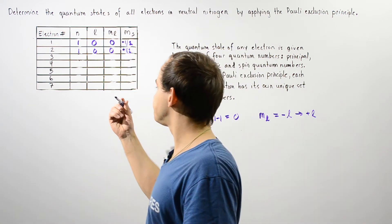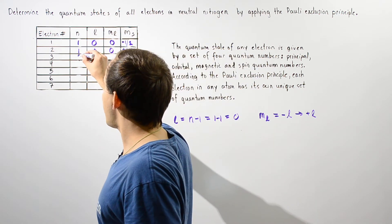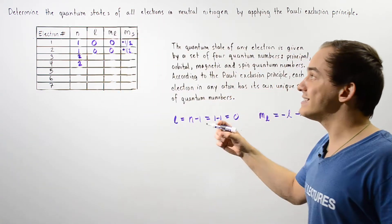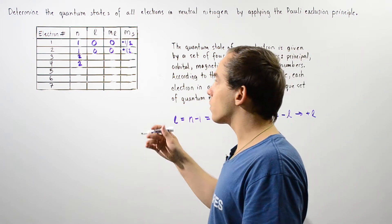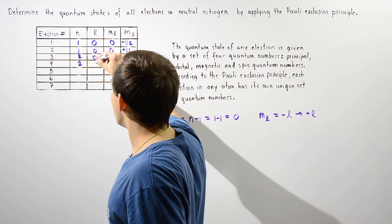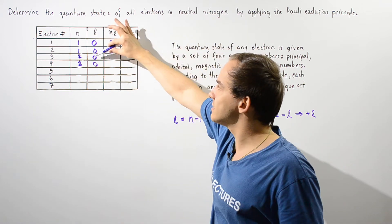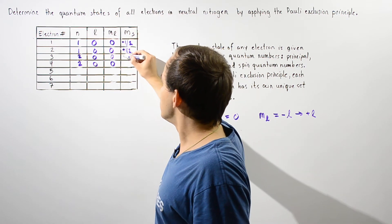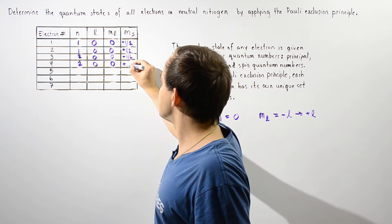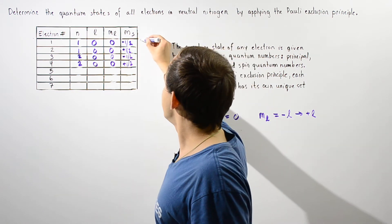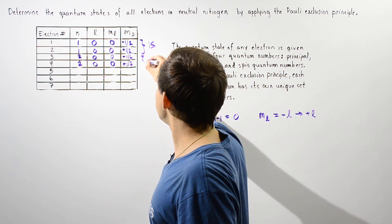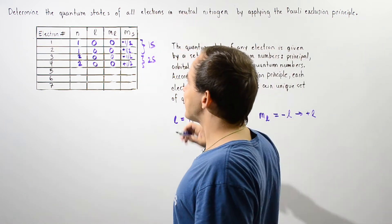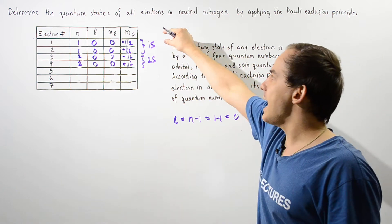Moving on to electrons three and four, the next energy state is given by n equals 2. For n equals 2, L can be 0 or 1. Because 0 is lower in energy, we use L equals 0 for both. Since L is 0, ML must also be 0. We assign MS equals negative one-half and positive one-half respectively. This represents the 2s subshell, and by the Pauli exclusion principle, a maximum of two electrons fit inside this orbital.